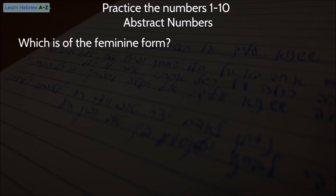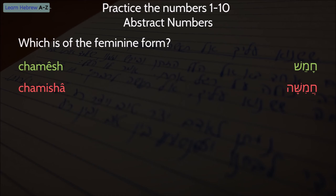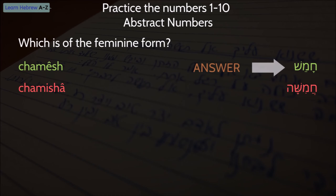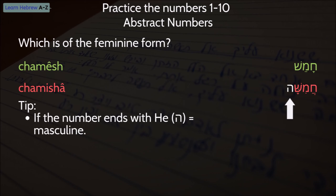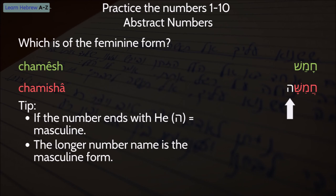The first question I have for you today is: which one of the following numbers is of the feminine form — Chamesh or Chamisha? Pause the video for a few seconds and try to figure it out. The correct answer is Chamesh. In the 1 to 10 numbers, the numbers that end with the letter He are of the masculine separate form. You can also remember that the longer names represent the masculine form and the shorter ones the feminine form.